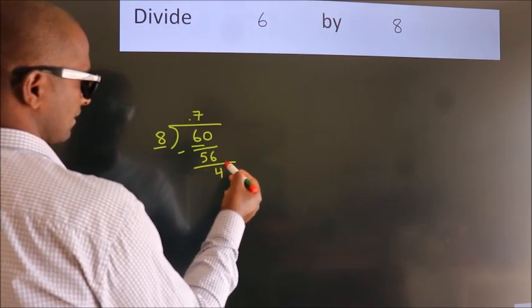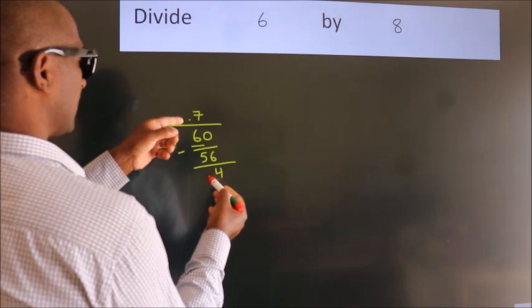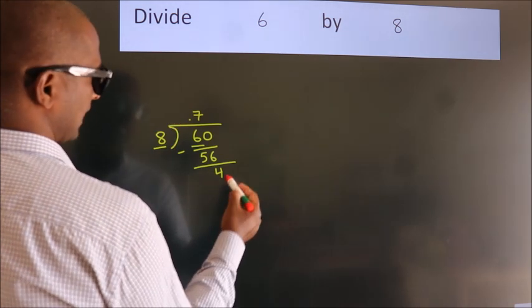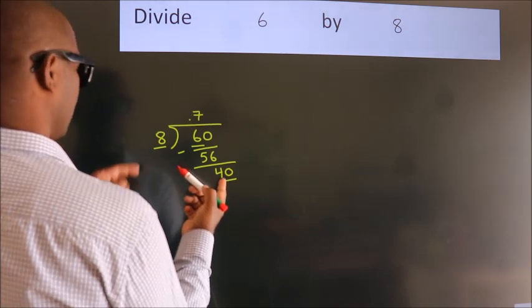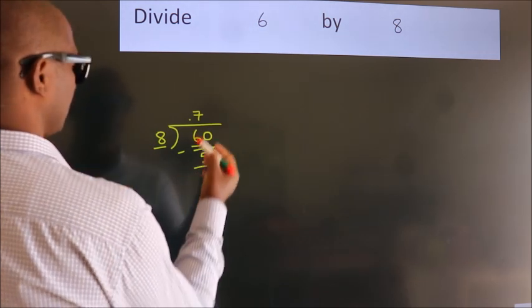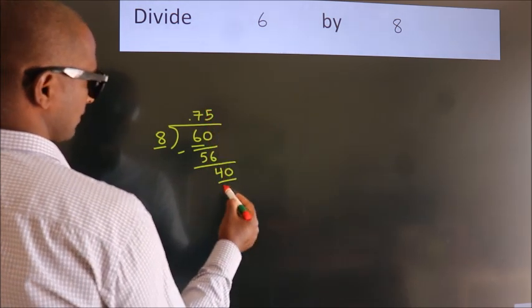After this, we already have the decimal, so directly take 0. So 40. When do we get 40 in the 8 table? 8 times 5 is 40.